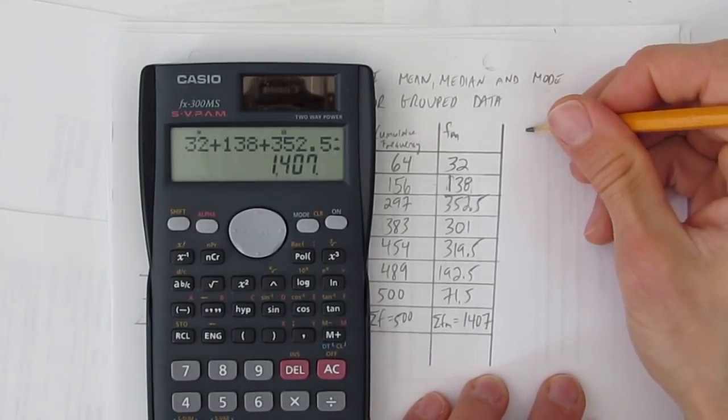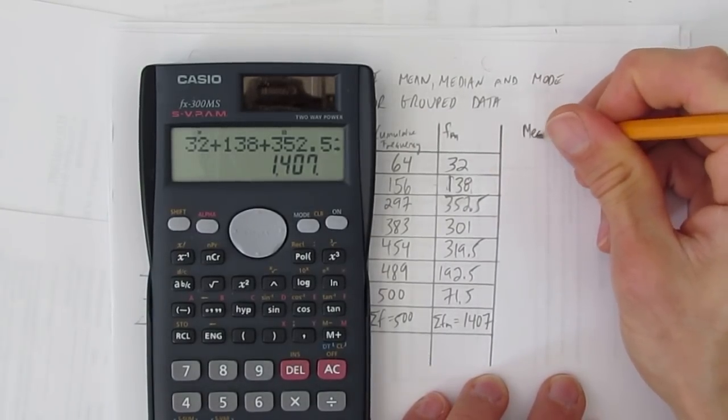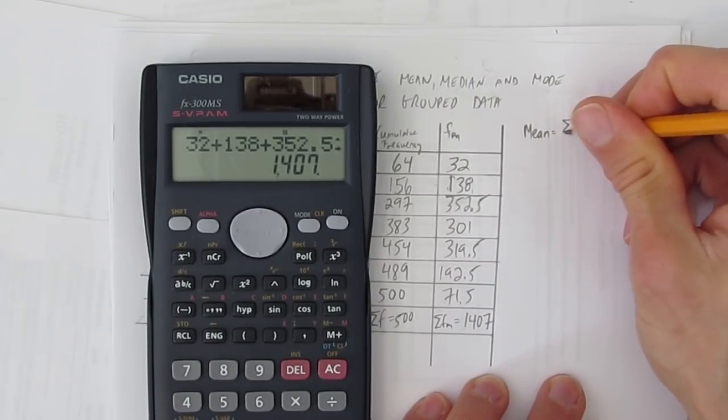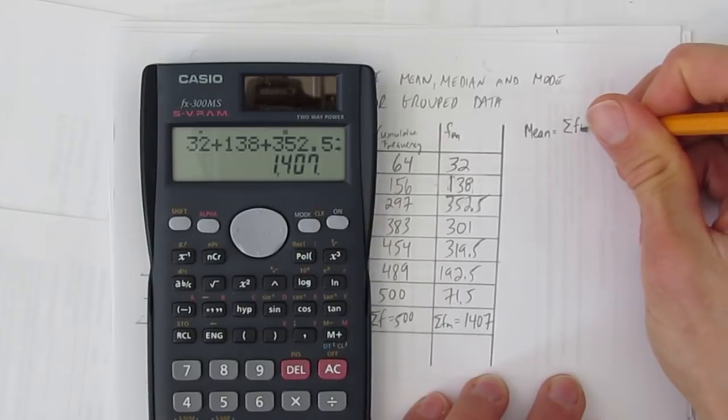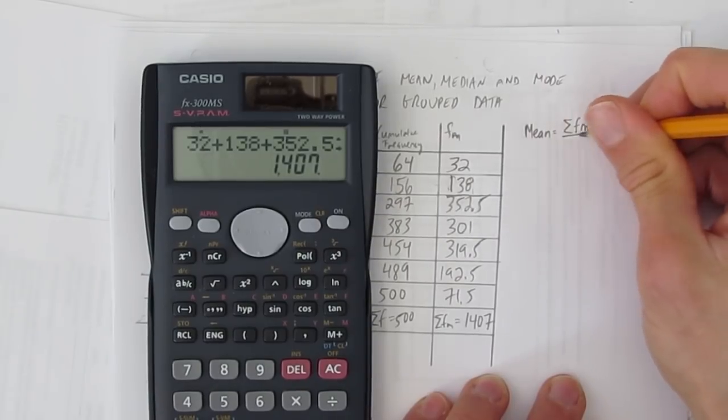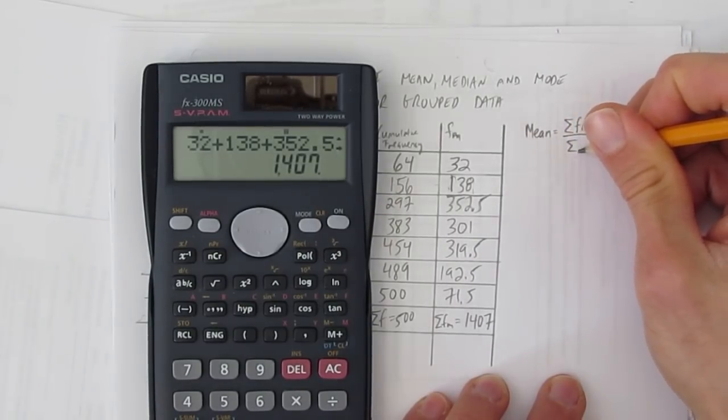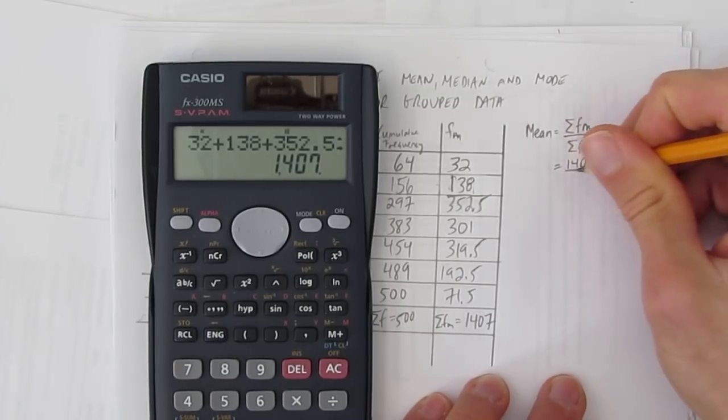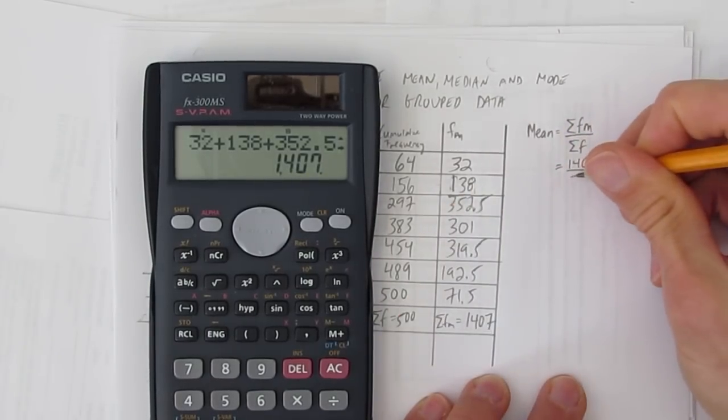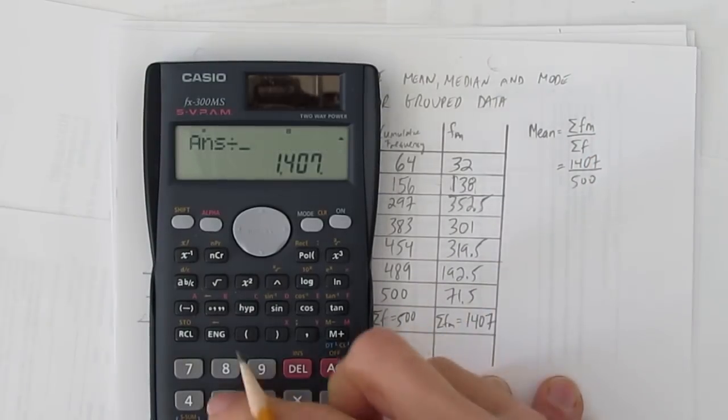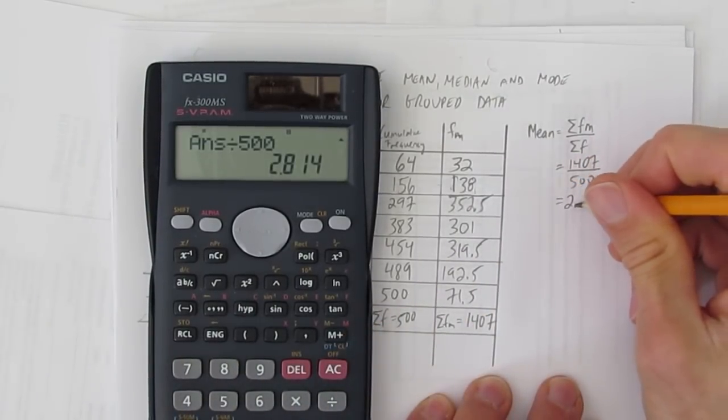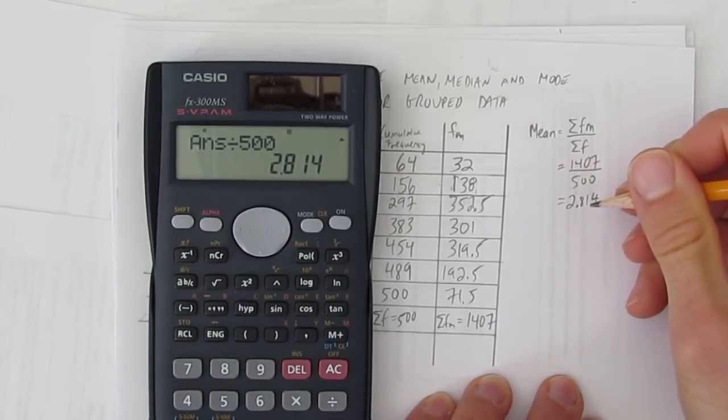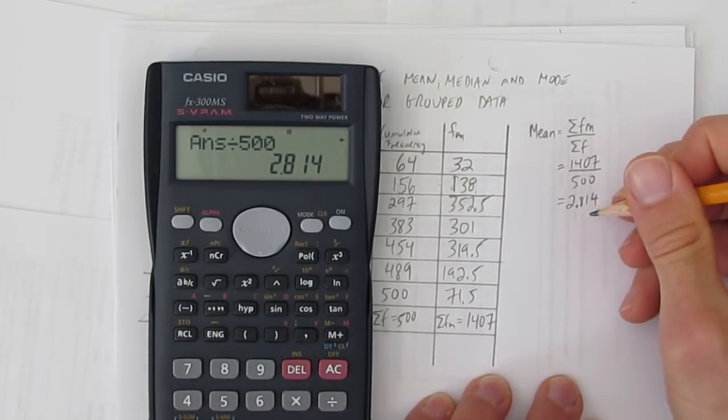Why all that? Because, when we're going to calculate the mean, all this table, well so far, is just to calculate the mean. Which is, take the sum of all your frequency times your midpoints and divide by the sum of the frequencies. That is, take 1407 and divide by how many things we had? 500. And you get 2.814. And so now we know the mean. The mean in this case is 2.814.